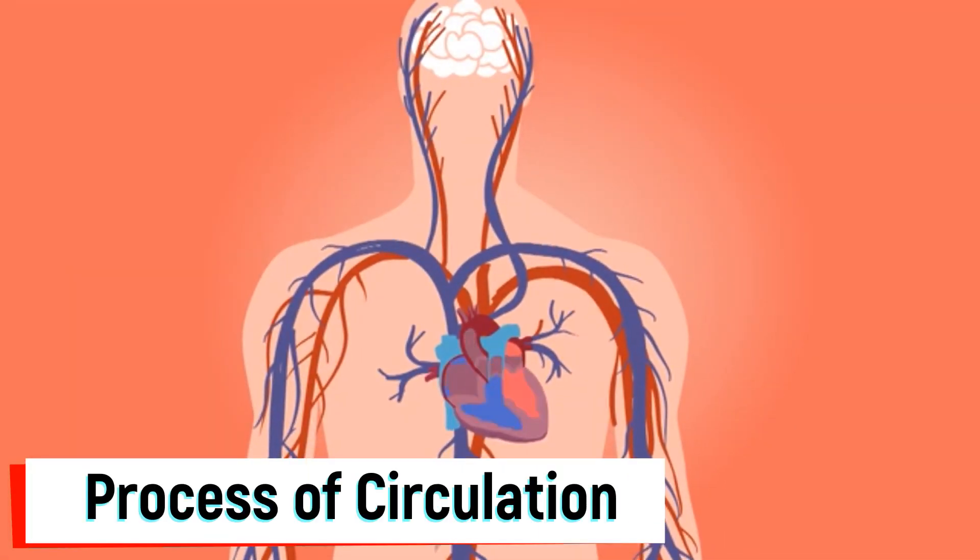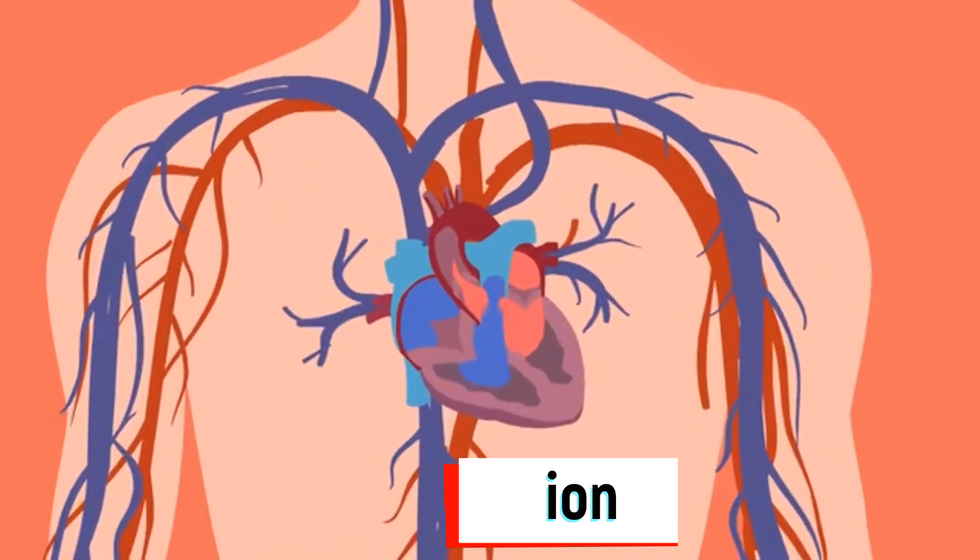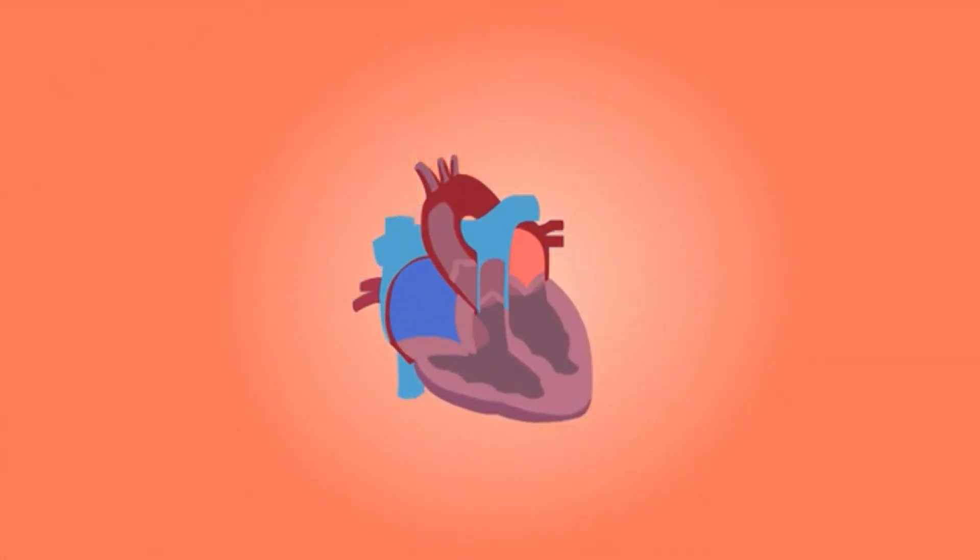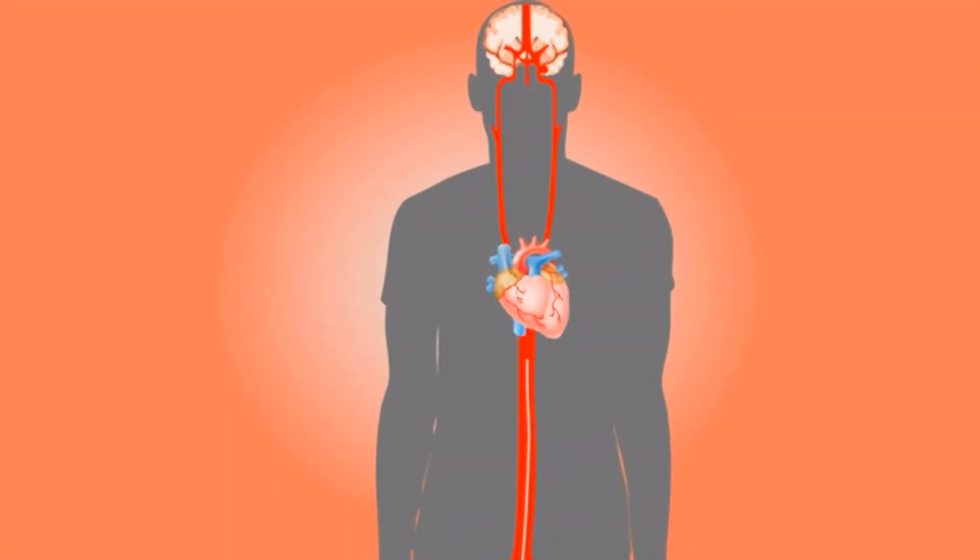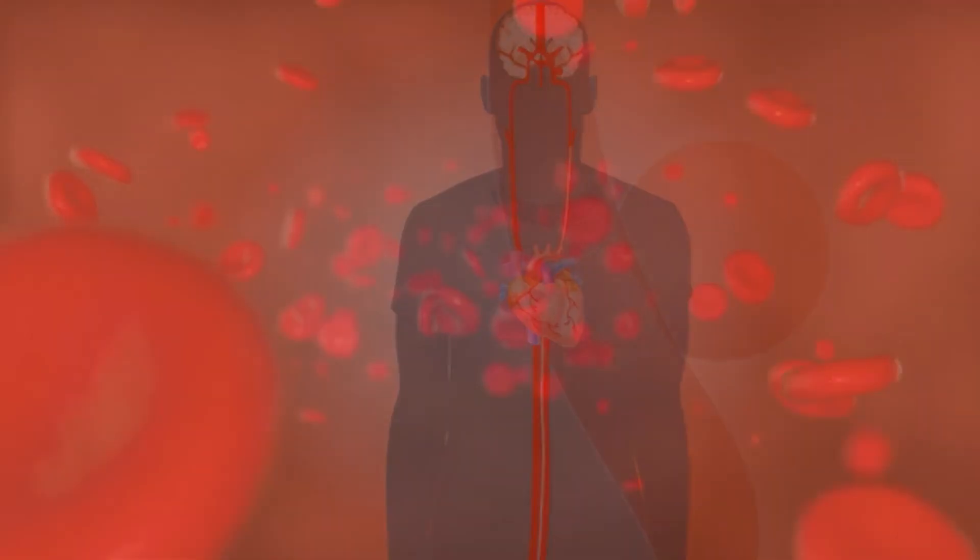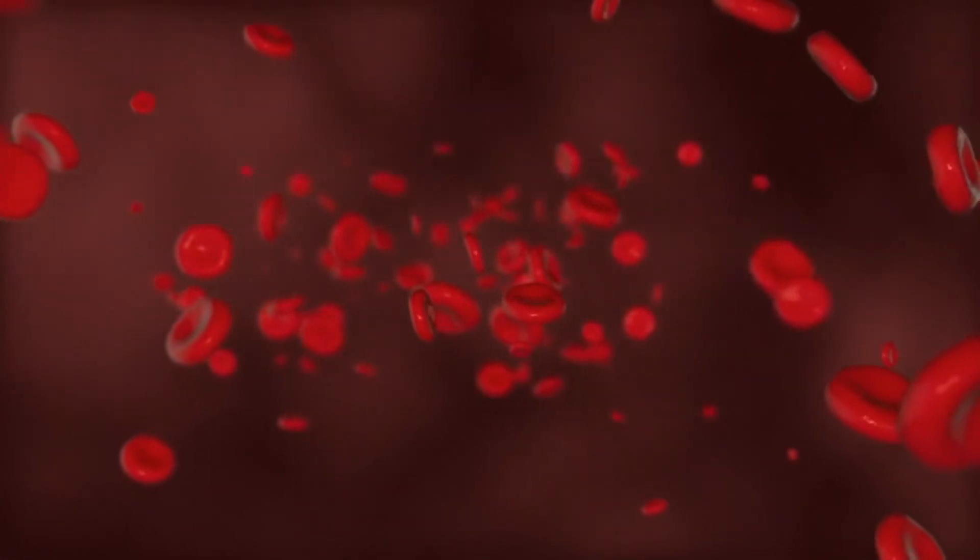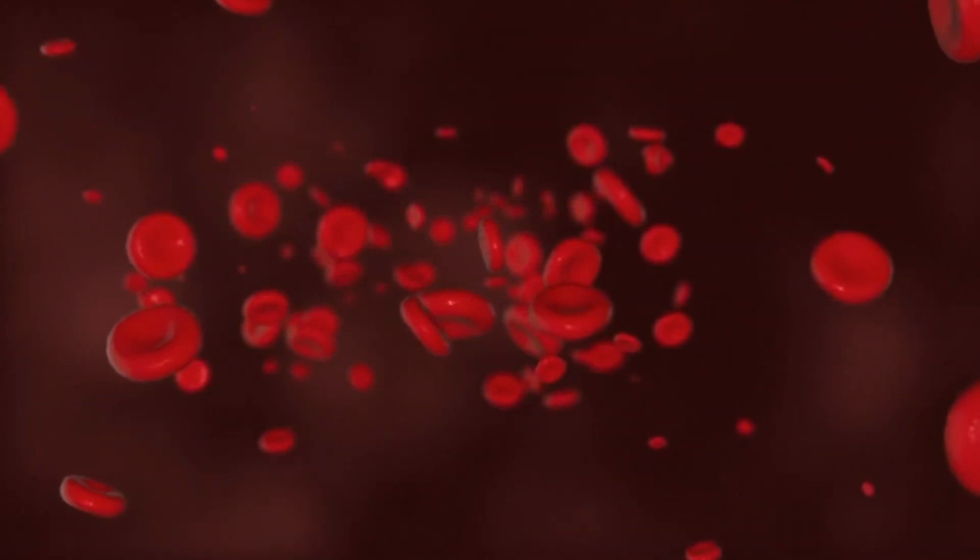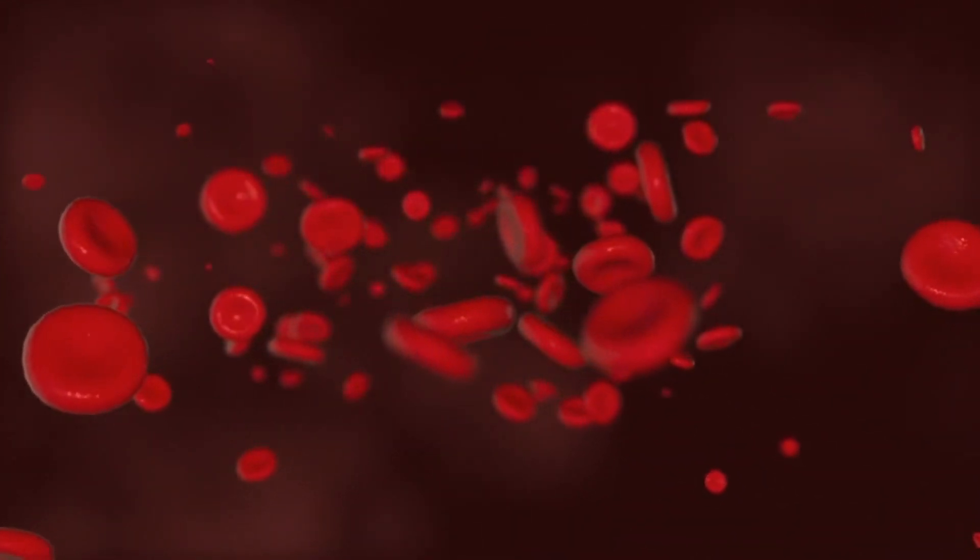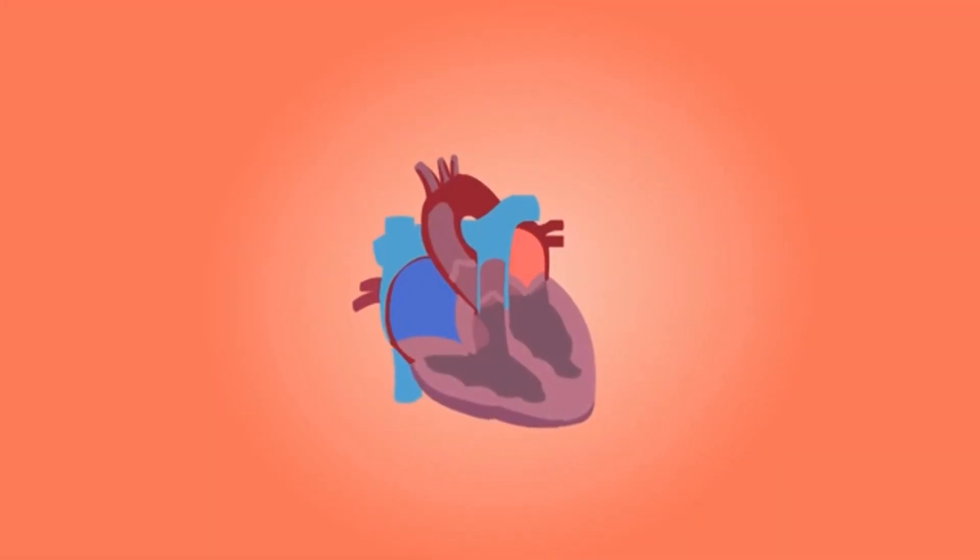Oxygen-poor blood from the body is carried by the superior vena cava and the inferior vena cava to the right side of the heart. From here the blood is pumped into the lungs. In the lungs, the waste gases are removed from the blood which we breathe out. At the same time, the blood collects oxygen from the air present in the lungs. The oxygen-rich blood is pumped back into the left side of the heart. From there the arteries circulate it to the rest of the body.